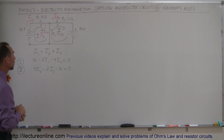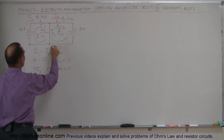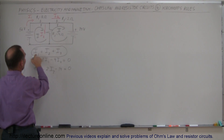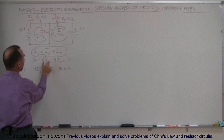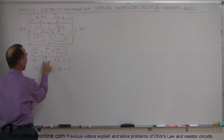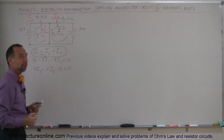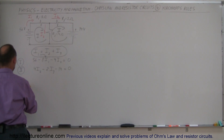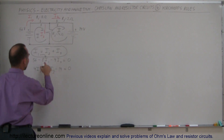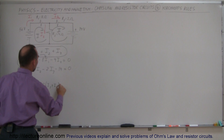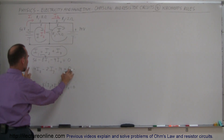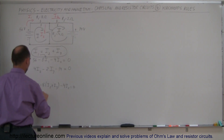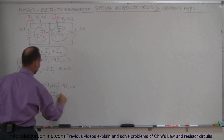Now it's an algebra exercise. Using the first equation, we replace I1 with I2 + I3 in the second loop equation, eliminating I1. That gives us: 56 − 8(I2 + I3) − 4I2 = 0. Simplifying, we combine the I2 terms: minus 8I2 and minus 4I2 gives minus 12I2, minus 8I3, and moving 56 to the right: −12I2 − 8I3 = −56. The third equation remains unchanged: 4I2 − 2I3 = 14. We've reduced the problem to two equations and two unknowns.